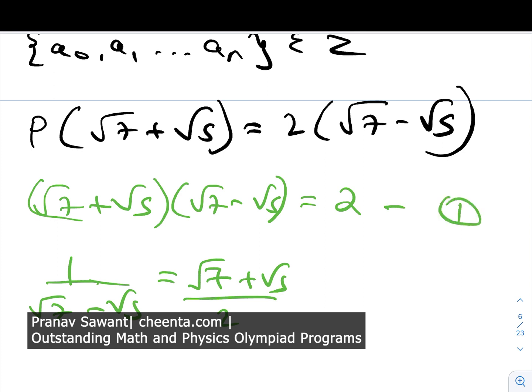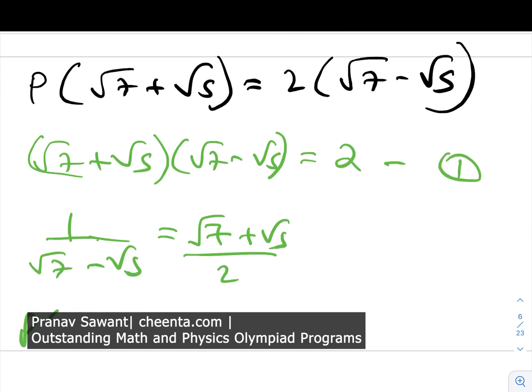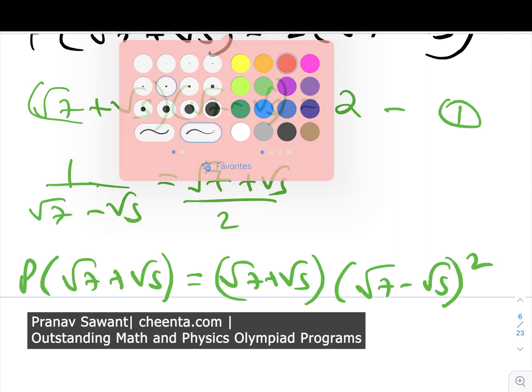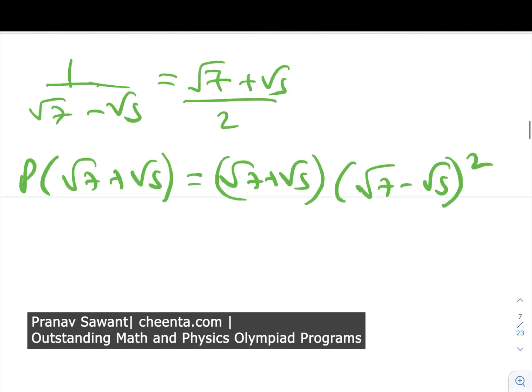This is the first observation we can conquer. I can write p(√7 + √5) equals - let's substitute this 2 as the given equation. I'll get (√7 + √5) times (√7 - √5) multiplied by (√7 - √5), so we get this whole square term over here. What do we do from here when we have this (√7 - √5)² expression?